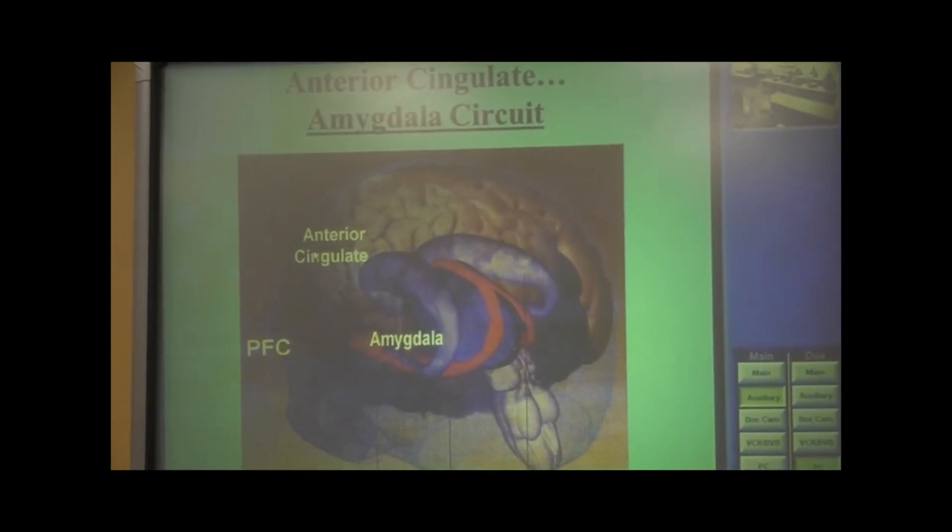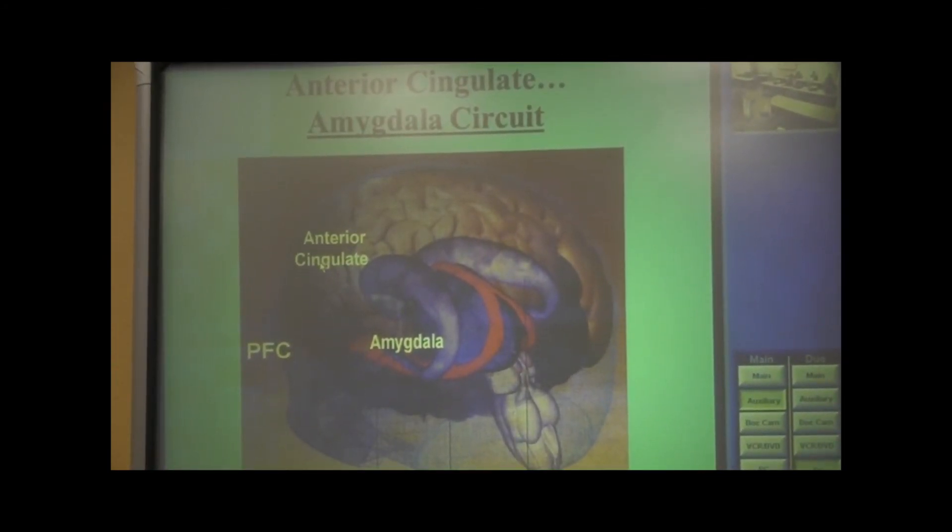And under normal conditions, when you activate with cortisol the anterior cingulate, it will come down, and it will shut down some of the activity in the amygdala. So one additional example of top-down control.